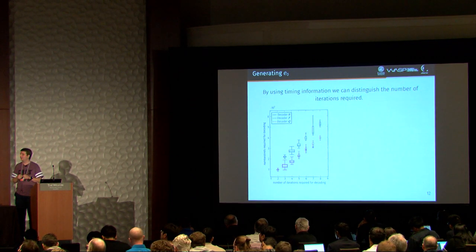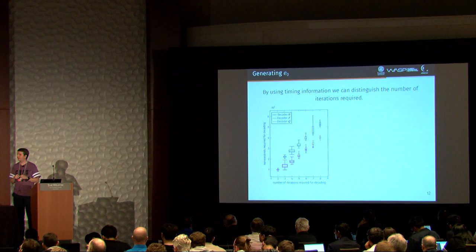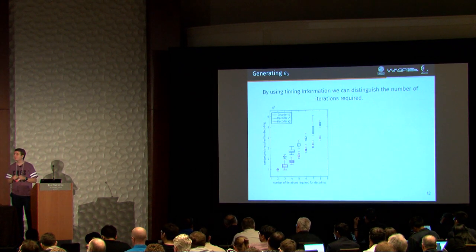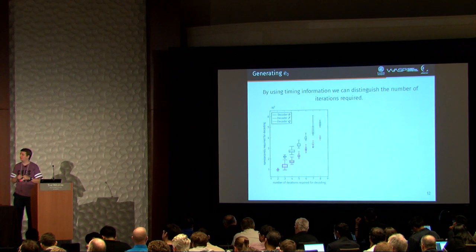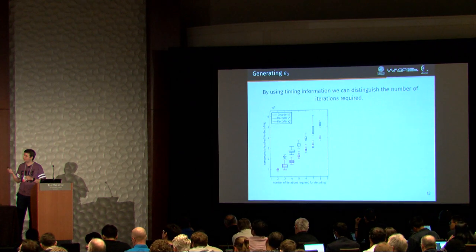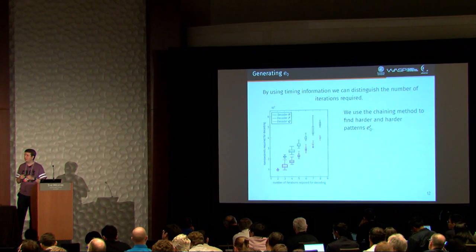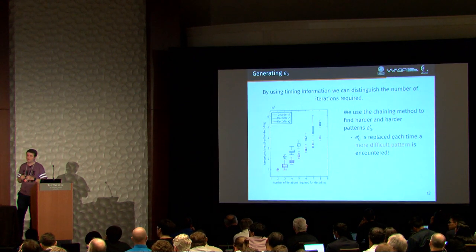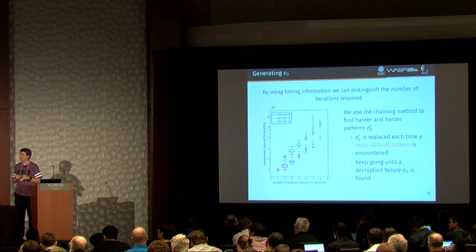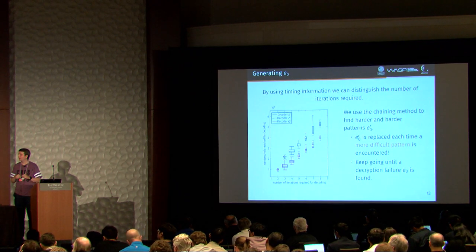And we can see here that by just measuring the time, we can easily distinguish the number of iterations required to decode a specific pattern. And this is for three different implementations. And so if we take a random pattern, we try to decode it. And each time we find a new pattern that takes longer time to decode, we save that as a new basis. And we keep going until we find a new pattern that is not decodable. And we use that as E0.